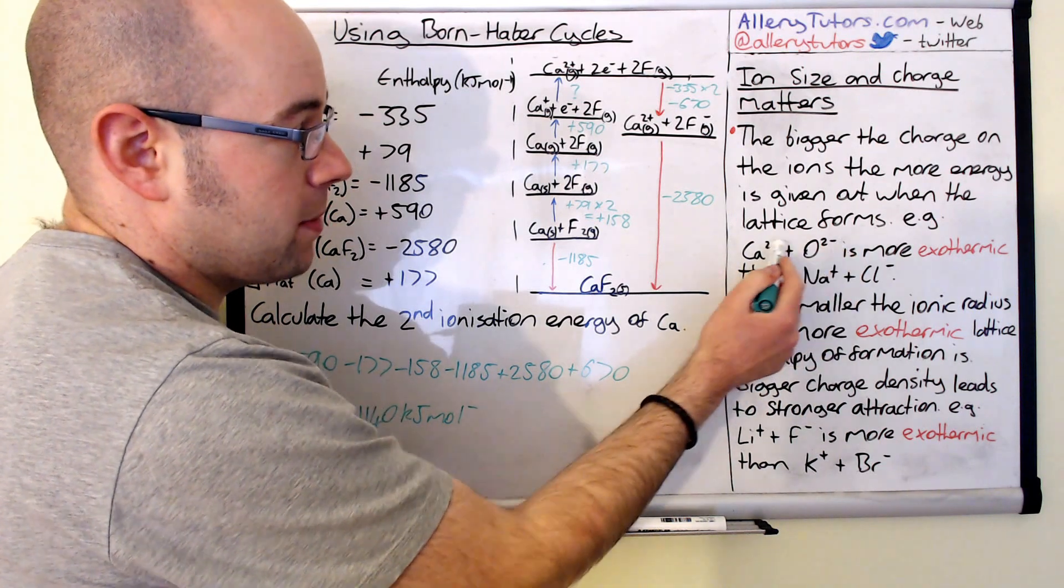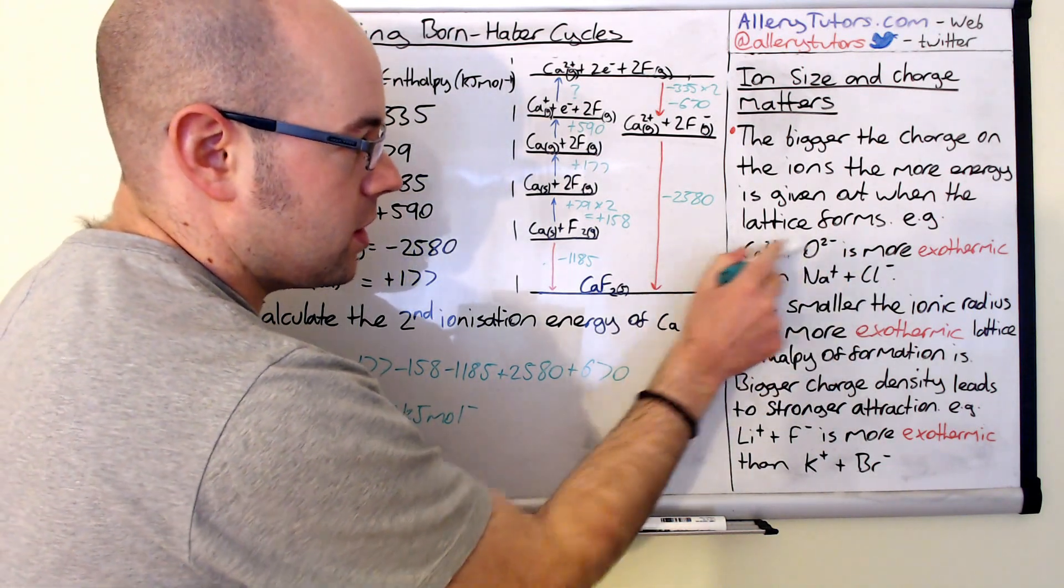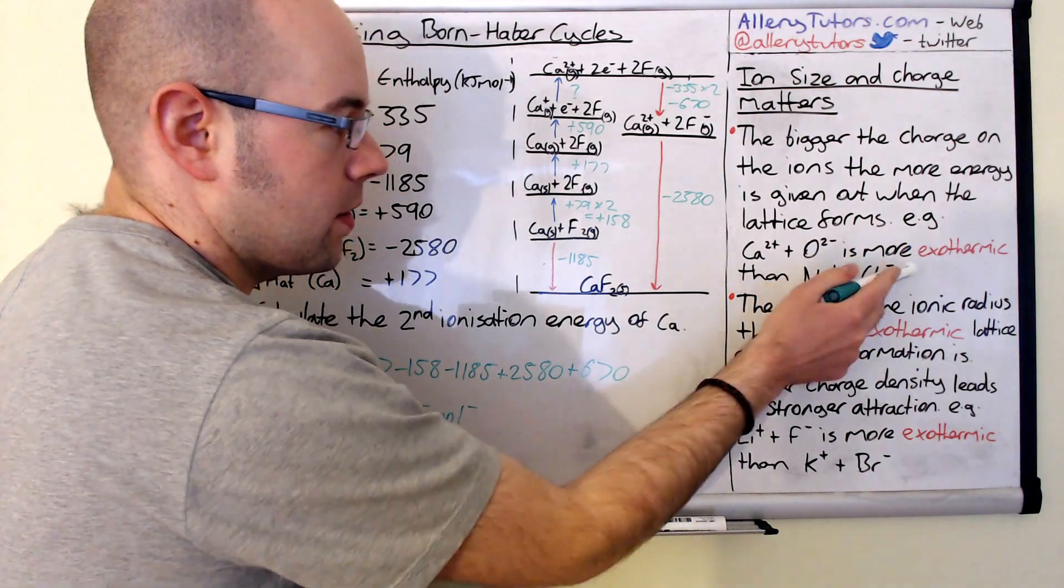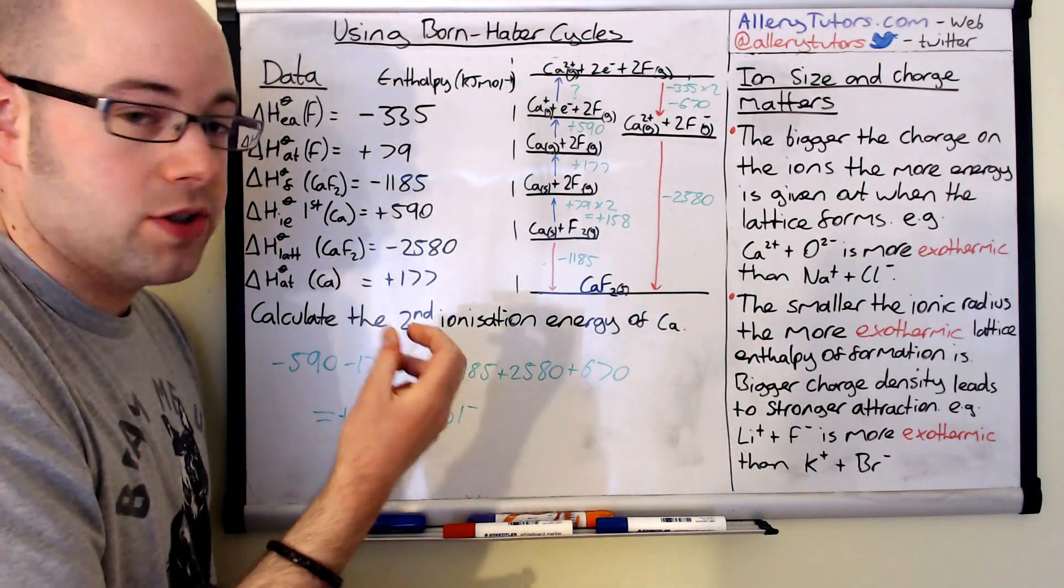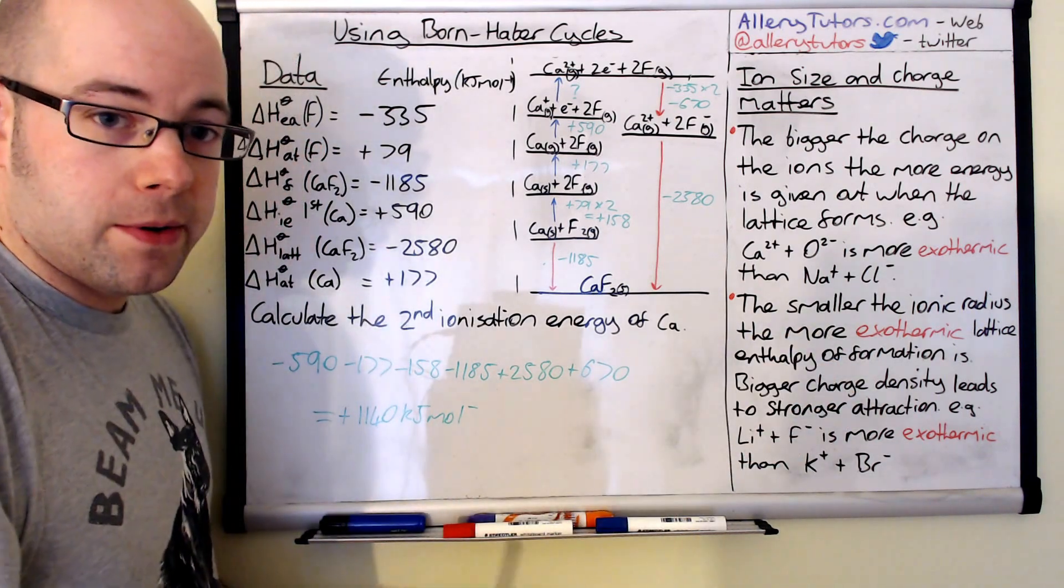So calcium and O2 minus you can see they've got a bigger charge than Na plus and Cl minus. So this one is going to be more exothermic than that one. So the size of the charge matters. And not only that but the size of the ion as well.